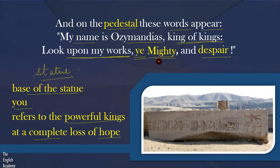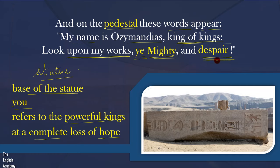He told all you powerful kings of the world to look upon his great statue and feel sad and hopeless. This shows how proud King Ozymandias was — he had a huge statue of himself erected, wrote on the pedestal that he is the king of kings, and addressed the powerful kings of the world to look at his accomplishment and despair.